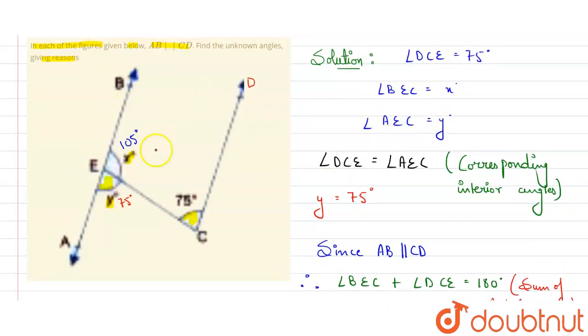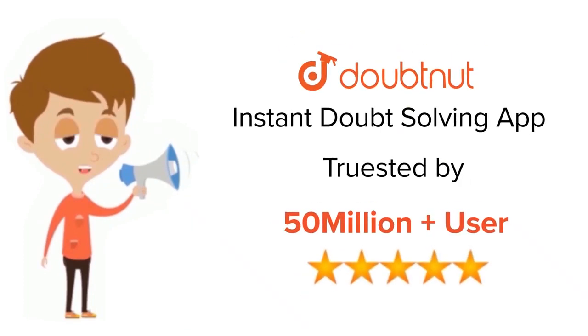To cross-check your answer, sum of these two angles should be 180 because they are on a straight line. So 105 plus 75 is 180, so answer is correct. Thank you.